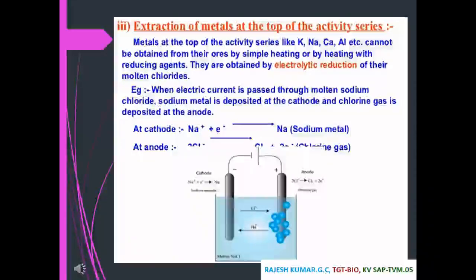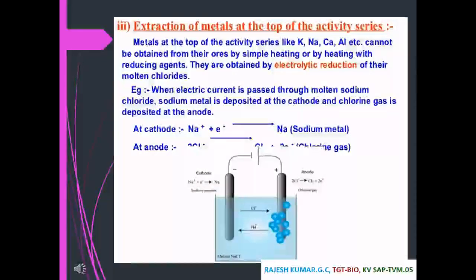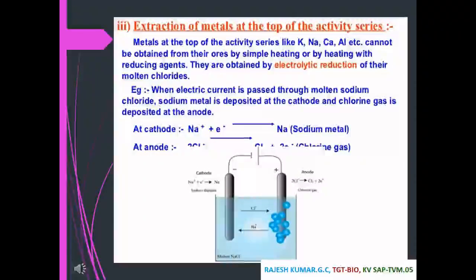Extraction of metals at the top of the activity series — such as potassium, sodium, calcium, and aluminium — cannot be obtained simply by heating or by heating with a reducing agent. They are obtained by electrolytic reduction of their molten chlorides. For example, when electric current is passed through molten sodium chloride, sodium metal is deposited at the cathode.